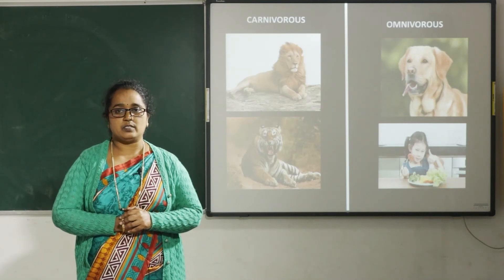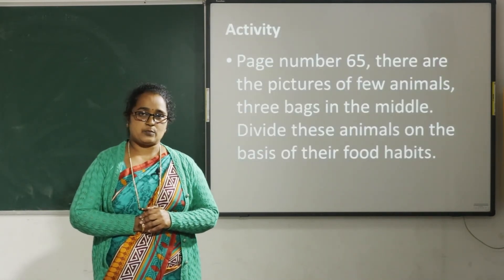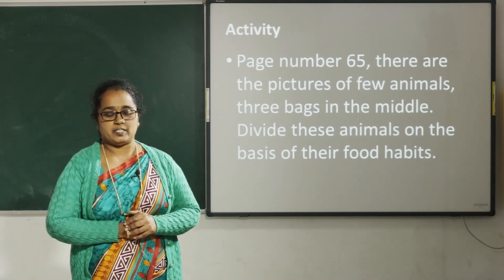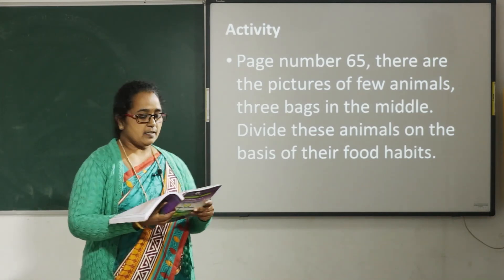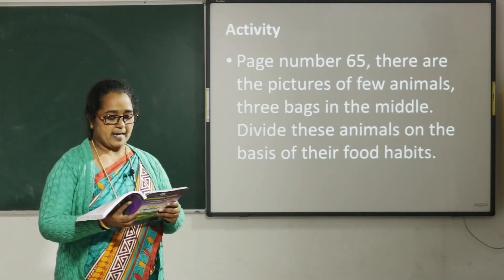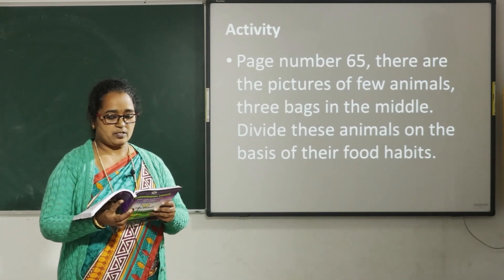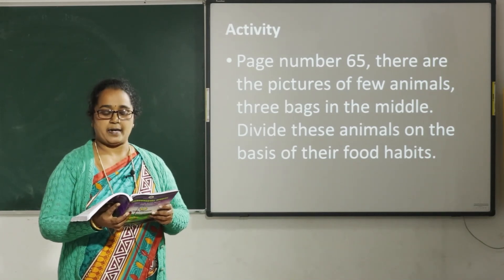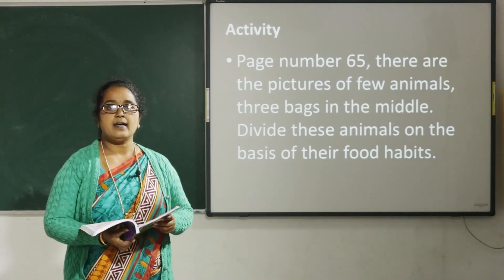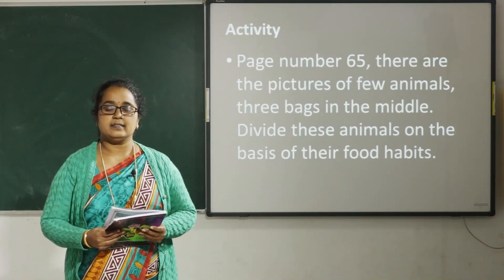I hope children you understood this lesson. Now take your EBS textbook and open page number 65. There is an activity. Here are some pictures of a few animals and there are three bags in the middle. Divide these animals on the basis of their food habits, then draw a line to the bag related to the animals. Complete it and be ready for the next class.